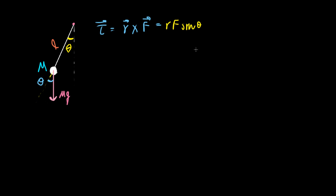So in this case, this is R, and this is the F. So the angle between them is theta, which we have here. So the torque in this case is going to be R, which is L, times F, which is mg, times the sine of theta.